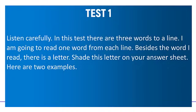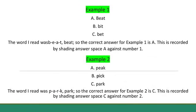Here are two examples. Example 1. The word I read was B-E-A-T, beat. So the correct answer for example 1 is A. This is recorded by shading answer space A against number 1.